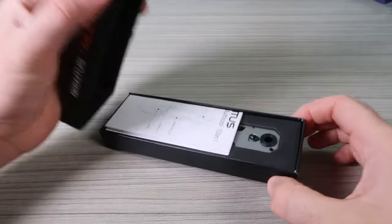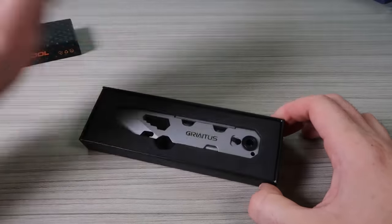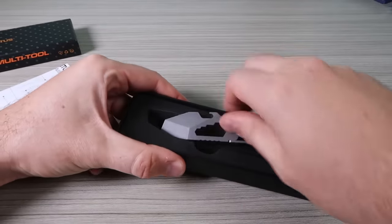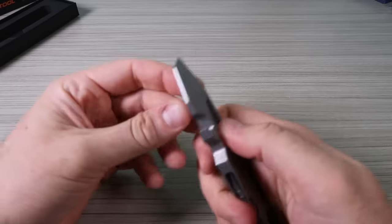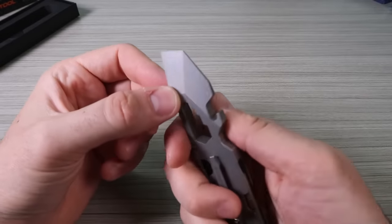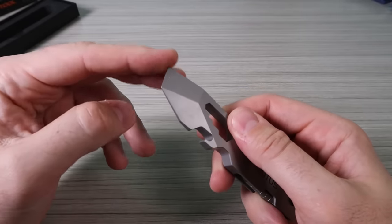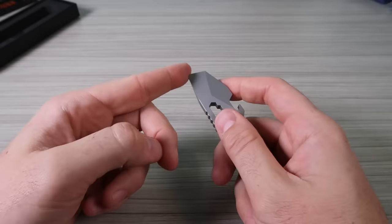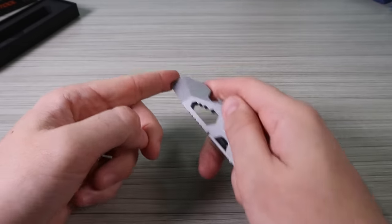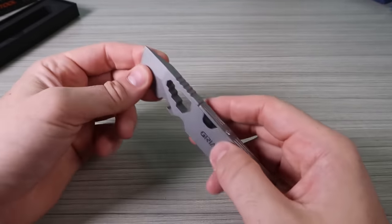Pry bar multi-tool. First of all, there's a pry bar. Very nice. Sharp enough edge to cut through the tape this way or that way, probably this way. Cut through the tape and boxes.